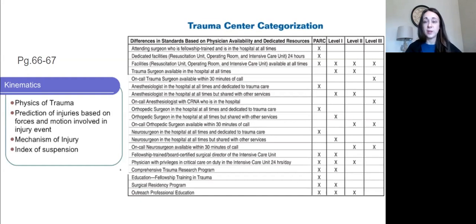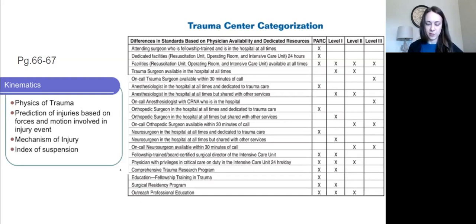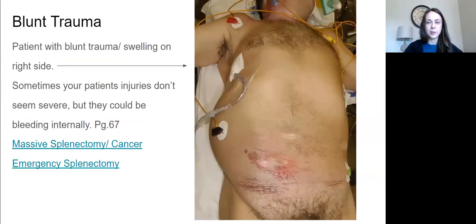Know your requirements in the book for categorization of level one through four trauma facilities. After that, it talks about kinematics — the mechanism of injury. This is a prediction of injuries based on the forces and motion involved in the injury event. Three factors are important: flexibility of the tissue, shape of the injury force, and velocity of the injury force. They look at kinematics after the patient has been sent to the proper categorized trauma facility.